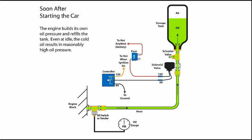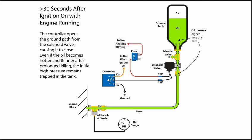Soon after starting the car, the engine builds up its own oil pressure and replenishes the oil in the storage tank. 30 seconds after switching the ignition on, the controller will switch the solenoid valve off, trapping oil at pressure in the storage tank. Now let's say that for some reason we don't actually drive the car but leave it idling for some prolonged period. Now the oil gets warmer and the oil pressure drops.